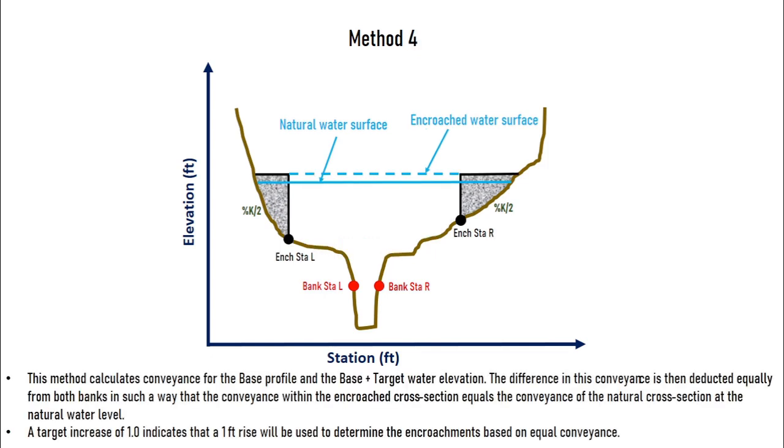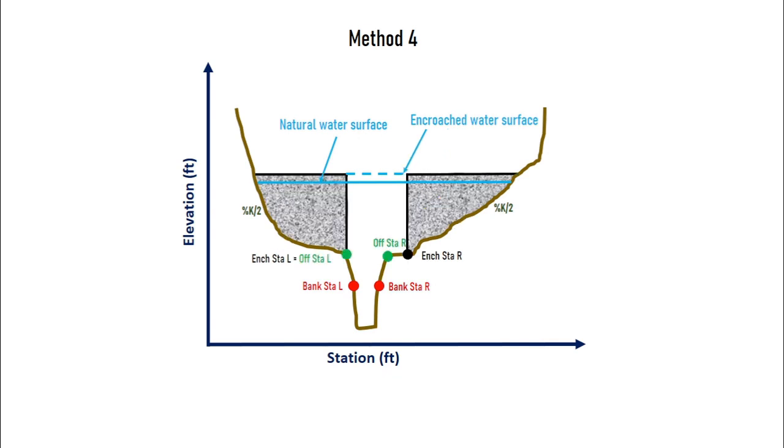In method 4, we need to give target surcharge over base profile. The algorithm then will calculate conveyance for base profile and base plus target profile. The difference in this conveyance is then deducted equally from both banks in such a way that the conveyance within the encroached cross section equals the conveyance of the natural cross section at natural water level. The limits of encroachment station are determined similarly to those in method 3 in case of inadequate conveyance capacity.